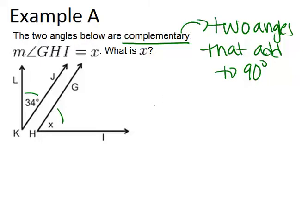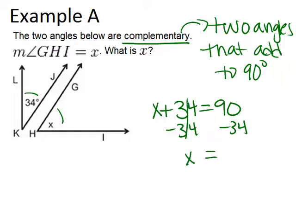So we can set up a little equation, x plus 34 equals 90, and solve that by subtracting 34 from each side. So we end up with our answer of x equals 56.